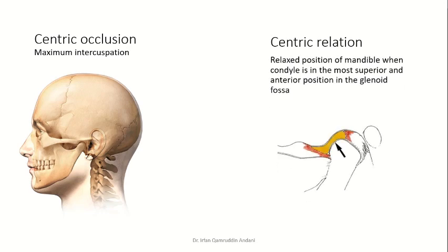Centric relation, however, is not dependent on the teeth. It is a position determined totally by the muscles. According to the latest definition, centric relation is defined as the most relaxed position of the mandible when your condyle is in the most superior and anterior position in the glenoid fossa. In centric relation, the condyle is in the most superior and anterior position in the glenoid fossa with the avascular part of the articular disc interposed between the condyle and glenoid fossa.